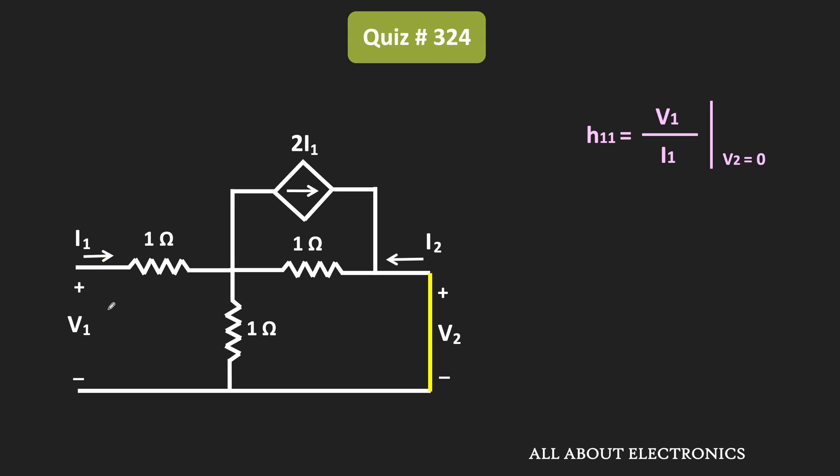So to find that, let's say the current in this loop is equal to I1. Similarly, the current in this loop is equal to I2. So if we apply the KVL in this loop, then we can write voltage V1 is equal to I1 times 1 ohm plus I1 plus I2 times 1 ohm. That is the voltage drop across this resistor. That means this voltage V1 is equal to 2I1 plus I2. Let's say this is equation number 1.